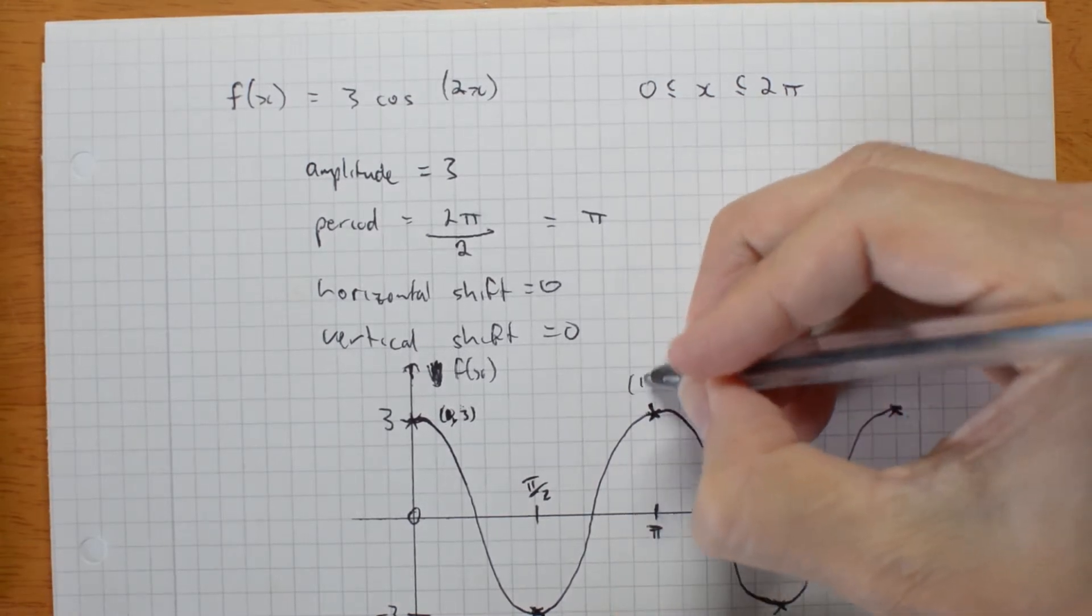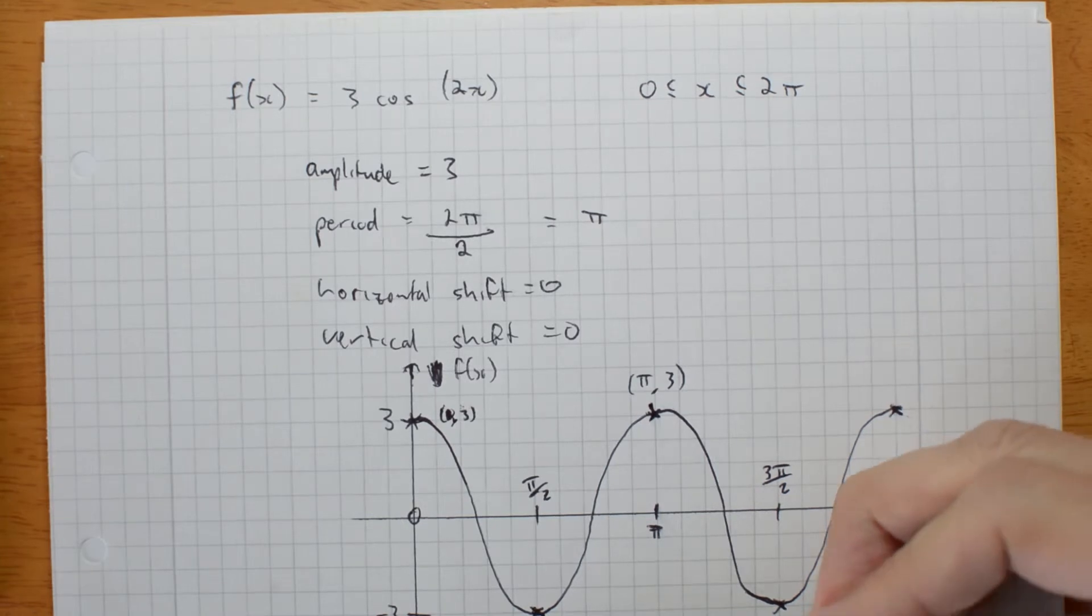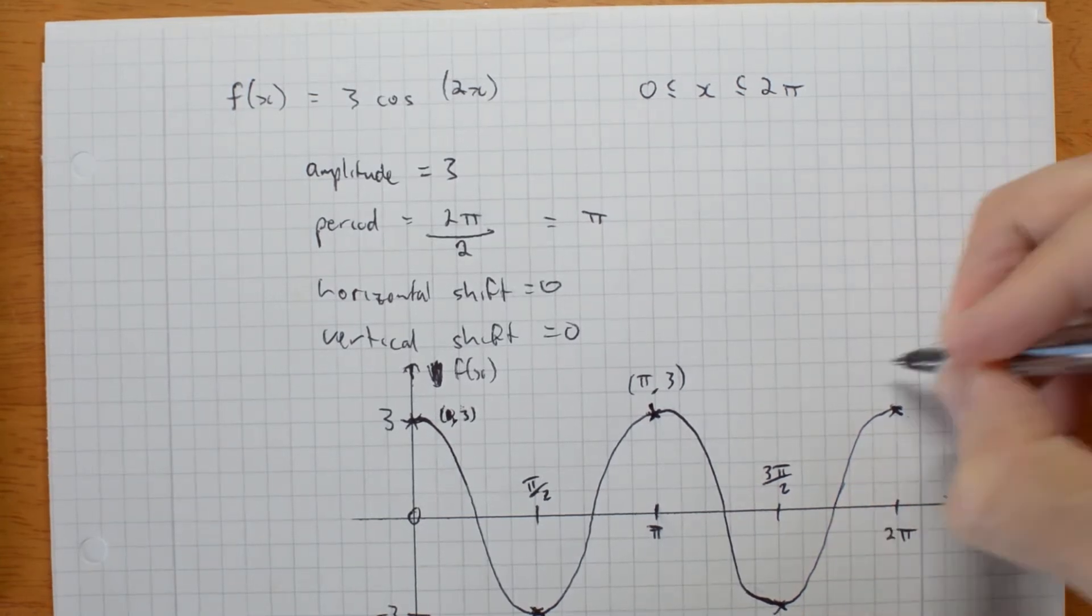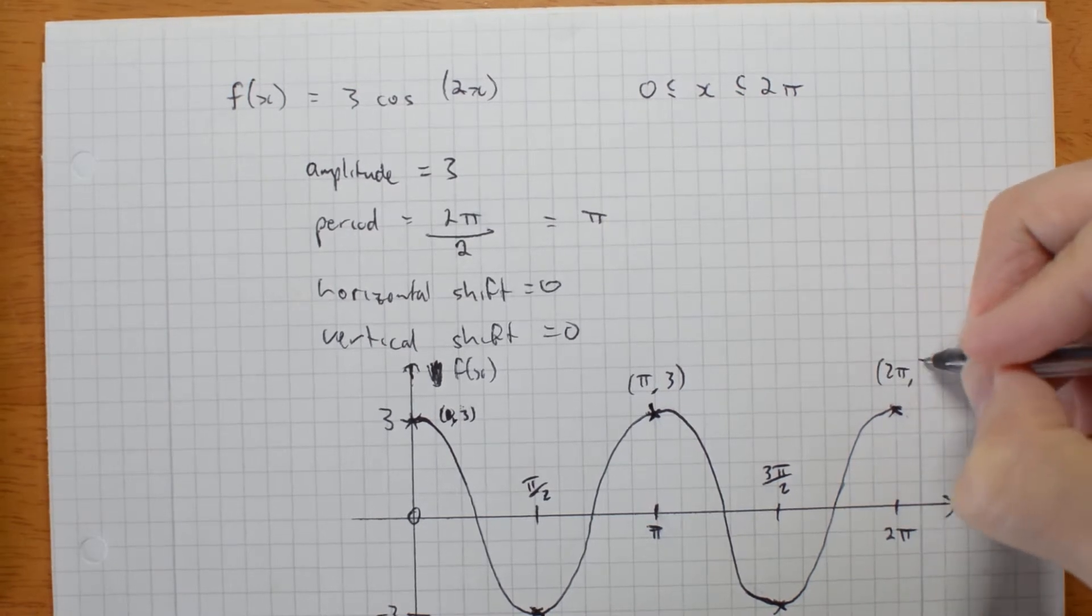And this halfway along will be 3 pi on 2. So this is pi on 2, negative 3. This is pi 3. 3 pi on 2, negative 3. And 2 pi, 3.